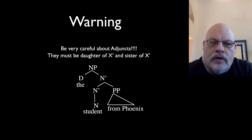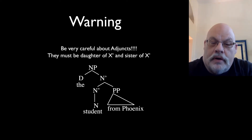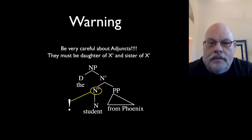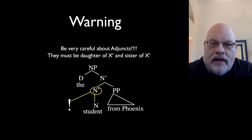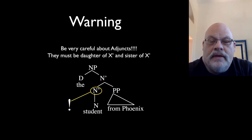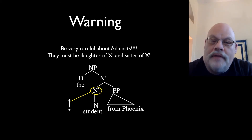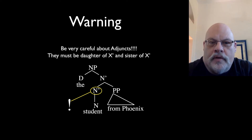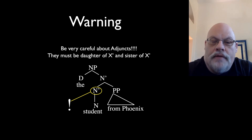You want to make sure you don't forget about adjuncts — adjuncts are daughters of bars, sisters to bars. You've got to have that extra bar level. Here's a useful cue: one way to know how many bar levels are in a tree is to count the number of adjuncts and add one. So in a noun phrase with one adjunct, you need two N-bars. Similarly, two adjuncts means three N-bars. Count the number of adjuncts, add one, and that's the number of bar levels you have.